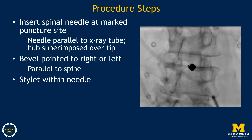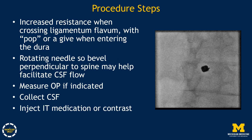The spinal needle should be inserted at the marked puncture site such that it is parallel to the x-ray tube. The hub should remain superimposed over the tip of the needle as it is advanced towards the thecal sac. The bevel should be pointed to the right or left, such that it is parallel to the spine, as this orientation may be associated with a lower risk of post-dural puncture headache. The stylet should remain within the needle. There is usually increased resistance when crossing the ligamentum flavum, with a pop or give when entering the dura.